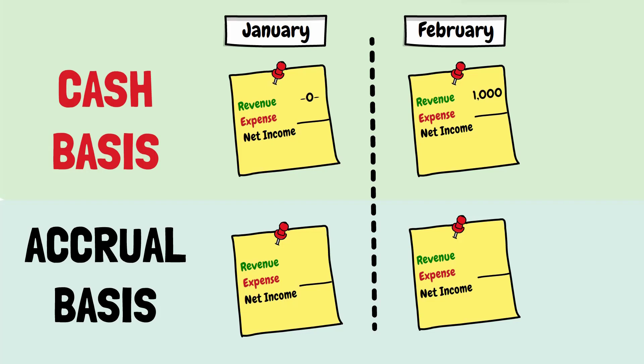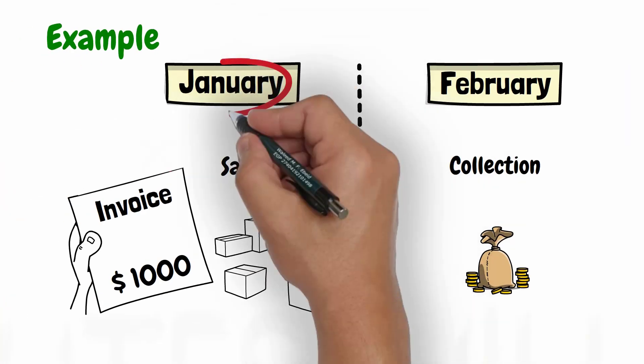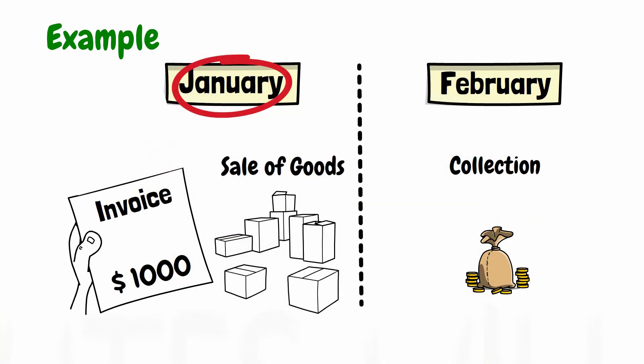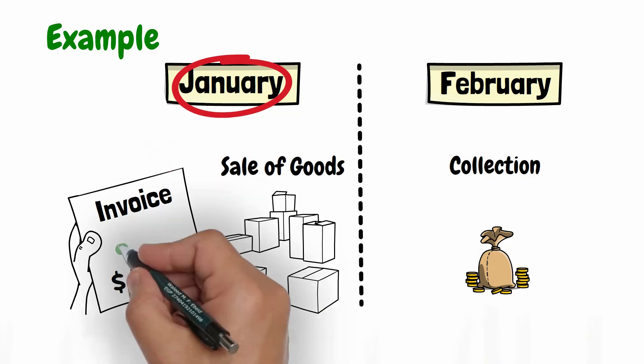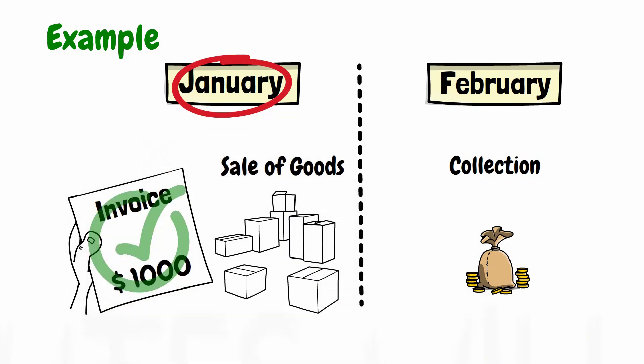Under the accrual basis, this sale should be reported on the income statement of January, because this sale took place during January. Under the accrual basis, the company realized revenue once the sale transaction was made, regardless of when the cash from the sale is received.